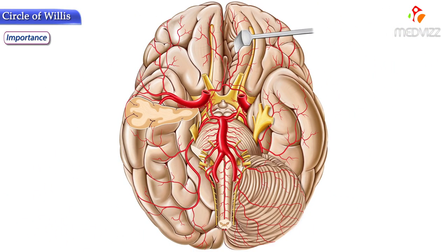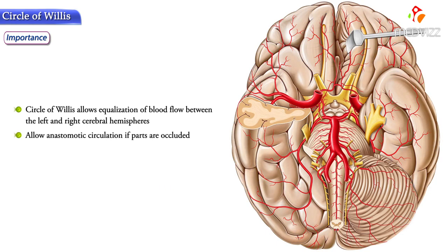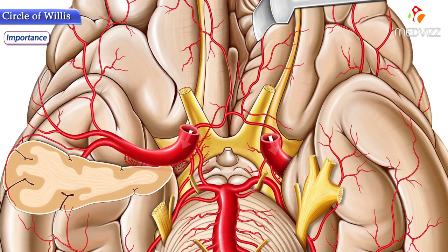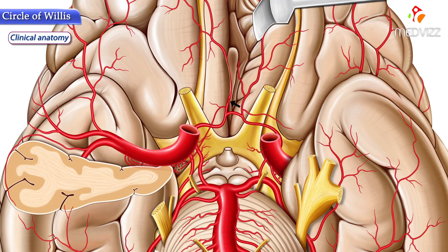The importance of the Circle of Willis is as follows: the circle allows equalization of blood flow between the left and right cerebral hemispheres, and can allow anastomotic circulation if parts are occluded. That is, the circle serves as a backup system or bypass, allowing for an alternative route if there is an occlusion in the normal route of supply to an area. For example, if there is an obstruction of blood supply through the internal carotid artery and blood cannot reach the front of the left side of the brain, blood will be routed to this area through the anterior communicating artery from the right internal carotid artery.